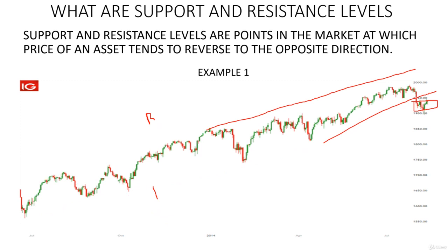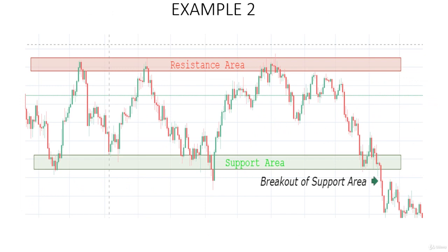Let's check out another example. This is a very good example of support and resistance. You can see the market had a resistance area over here — this area at which the market reversed. You can see this point reversed, this point reversed. We have more than two points at which the market reversed. The same goes for the support — you can see it reversed at these points as well.